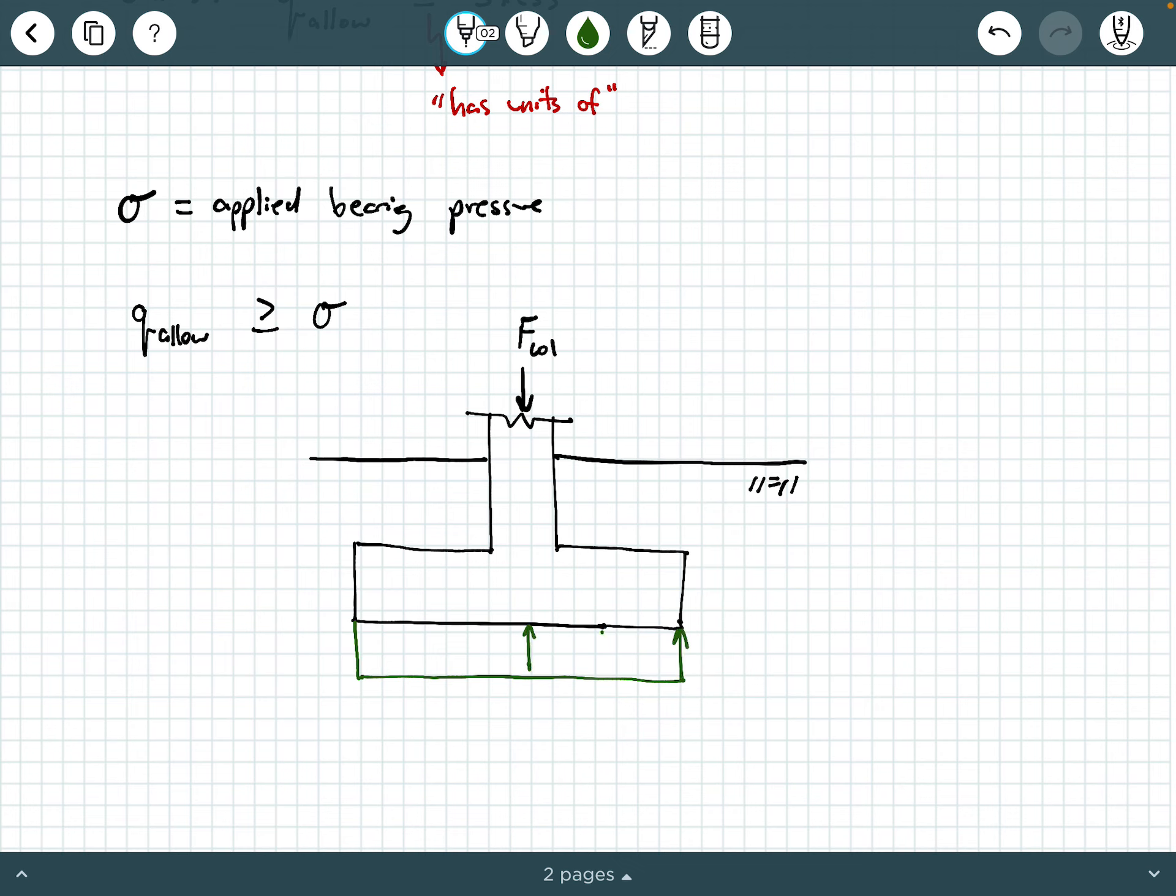And we're going to say that when this force from a column is induced into this foundation and the foundation is supporting that force, then what happens is beneath the foundation, we develop this bearing pressure. And if everything is concentric, which means lying along the center line of the foundation and the column, then we're going to have a uniform bearing pressure, a uniform applied bearing pressure, sigma.